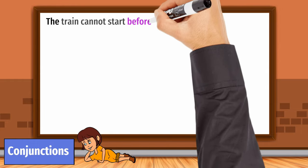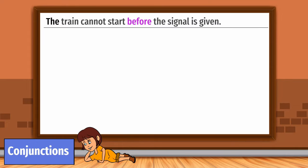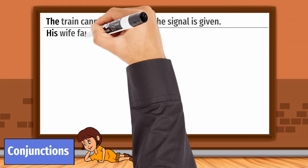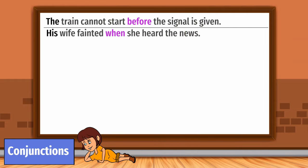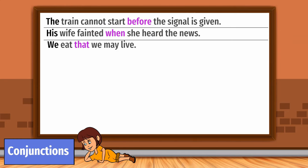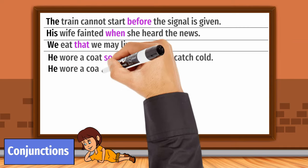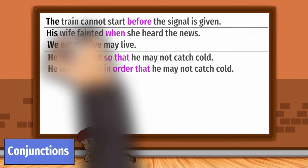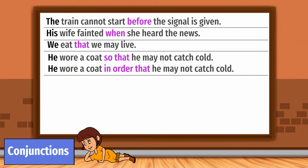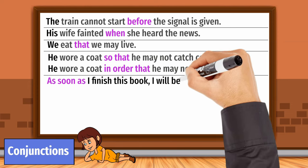The train cannot start before the signal is given. His wife fainted when she heard the news. He wore a coat so that he may not catch cold. He wore a coat in order that he may not catch cold. As soon as I finish this book, I will begin another.